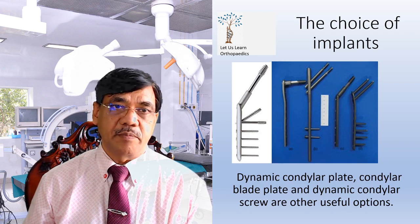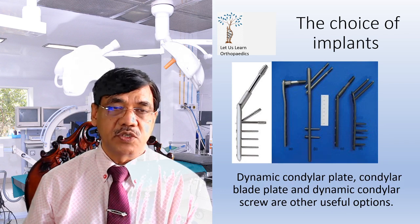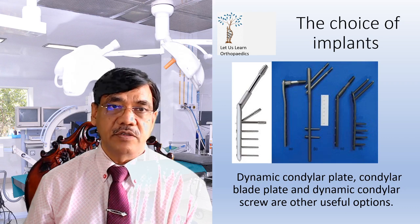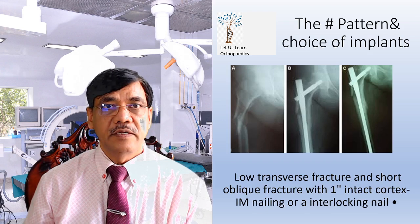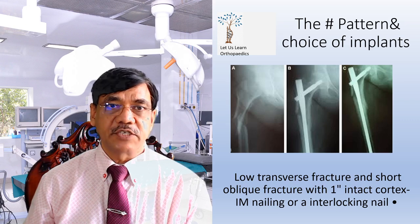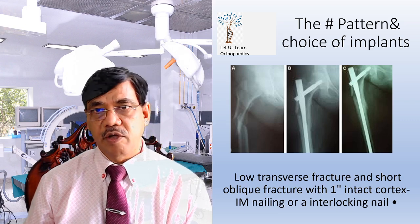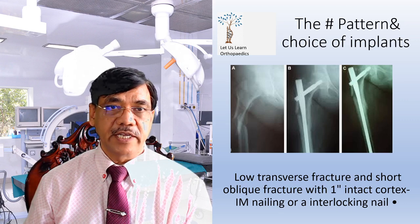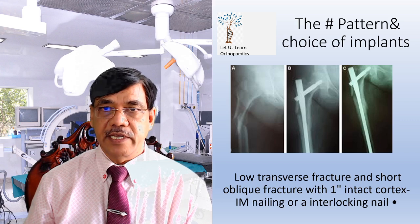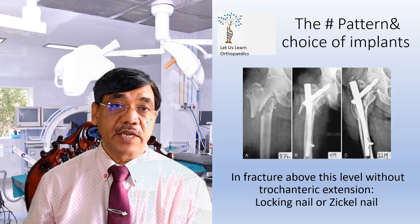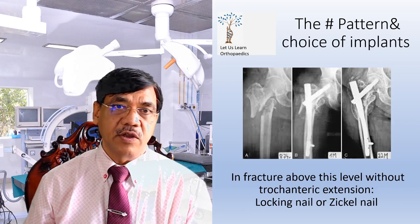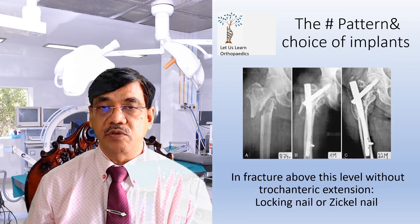The dynamic condylar plate and dynamic condylar screws are also useful options. For low-transverse and short oblique fractures with approximately one inch of intact cortex, intramedullary nailing or interlocking nailing can be done. For fractures above this level without trochanteric extension, a locking nail or GK nail can be used.